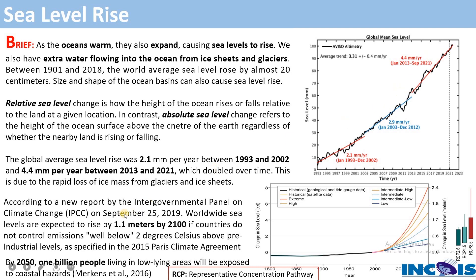According to IPCC reports, worldwide sea levels are expected to rise by 1.1 meters by 2100 if emissions continue at the current rate. By 2050, some scientists say 1 billion people living in low-lying areas will be exposed to coastal hazards because of sea level rise, based on projections of greenhouse gas emission RCP (Representative Concentration Pathways).